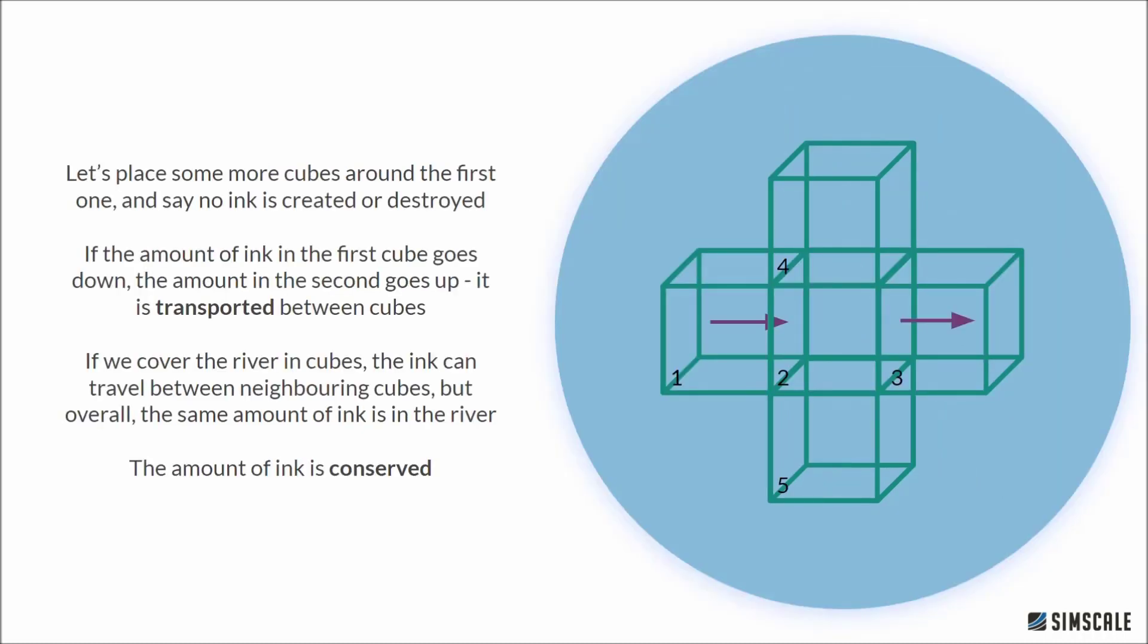Let's add a few more cubes and say that no chemical reactions are occurring and we aren't injecting any more ink, so no creation or destruction is going on. We place cubes around that first one. If ink leaves our old cube, it has to enter one of the other cubes, right? There's no creation or destruction, ink doesn't magically disappear. If the amount of ink in our original cube goes down, it must go up in another cube, probably the one just after it. The ink is transported between the cubes.